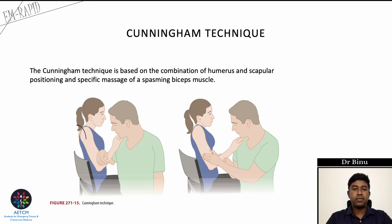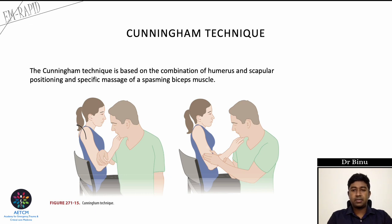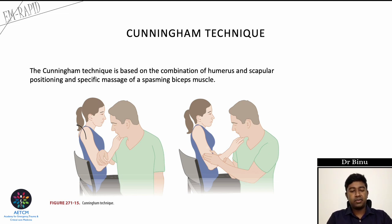The Cunningham technique combines humeral and scapular positioning with specific massage of the spasming biceps muscle. The patient is seated upright with shoulders relaxed. The affected arm is slowly and gently moved into full adduction with the elbow in flexion, and the patient's hand rests on the physician's shoulder. The trapezius and deltoid are gently massaged to relax the patient, then the biceps is massaged at the mid-humeral level. The patient is asked to elevate and retract the shoulders while continuing the massage, waiting for the humeral head to slip back into place.